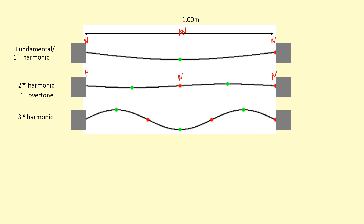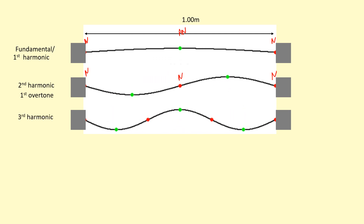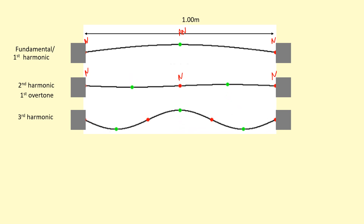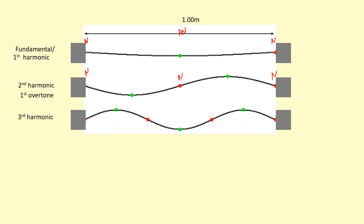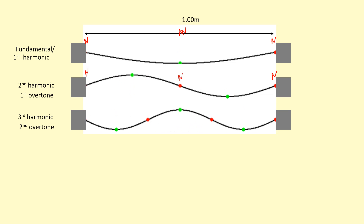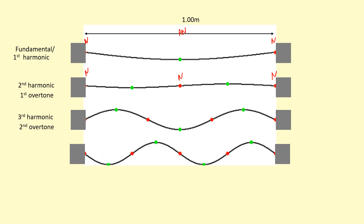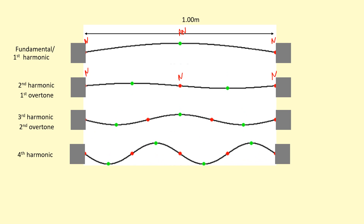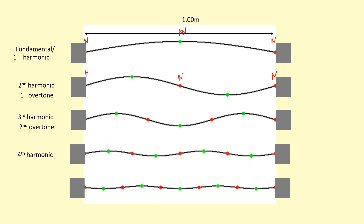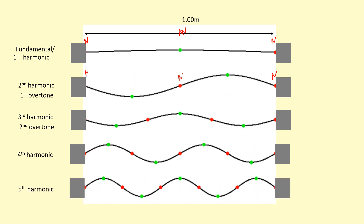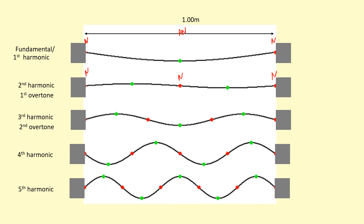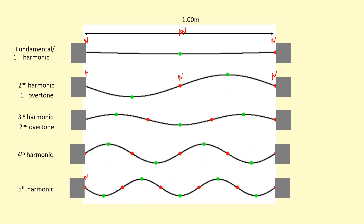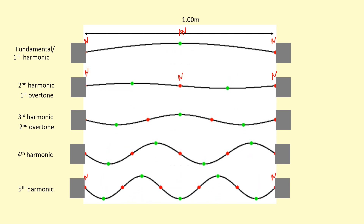This is the third harmonic. As you can see, it's got more nodes and more antinodes, and you can think of this as being formed of three loops. That's sometimes called the second overtone. And then we've got the fourth harmonic and the fifth harmonic. The thing that all these have in common is that both ends have got a node — a fixed point between them.